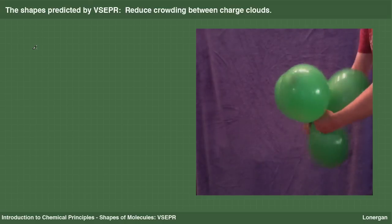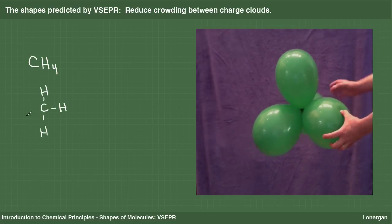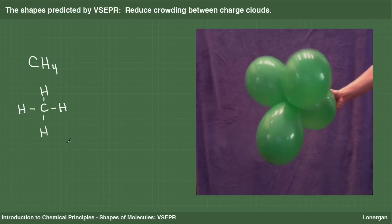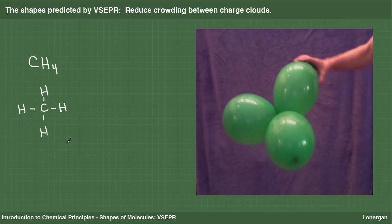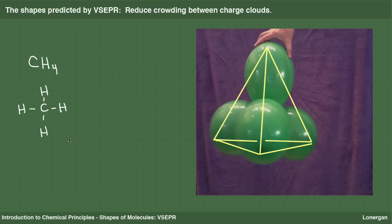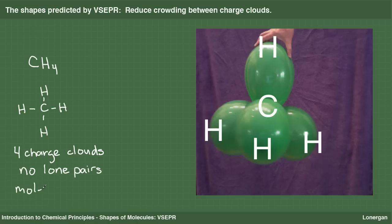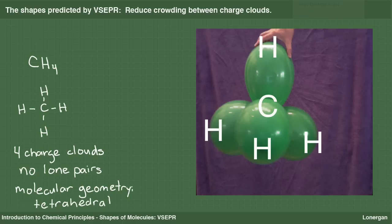If I add a fourth balloon, or charge cloud, I get a representation of a molecule such as CH4, also known as methane or natural gas. The balloons point to the corners of what is called a regular tetrahedron — a three-dimensional object with flat faces and straight edges whose four faces are all equilateral triangles. This geometry of four balloons is called tetrahedral. As a model of methane, the central atom is carbon and each balloon represents a bond to a hydrogen atom. There are four charge clouds around the carbon, all of them bonds with no lone pairs. The molecular geometry is tetrahedral. Note that the Lewis structure makes the molecule methane look planar, but in reality it is a three-dimensional structure with the C-H bonds each pointing to the corner of a tetrahedron.